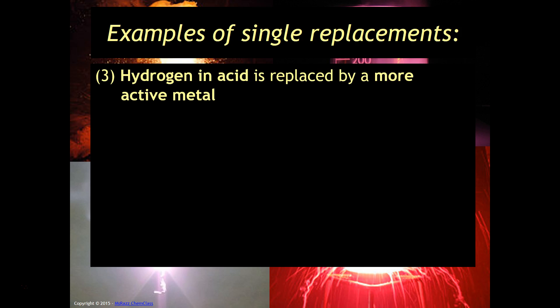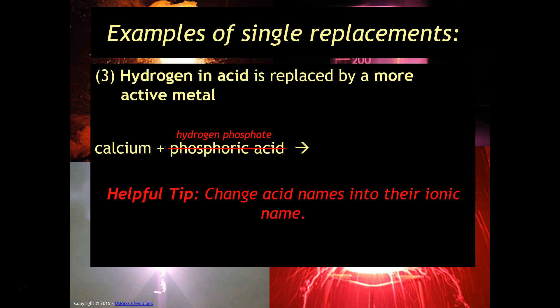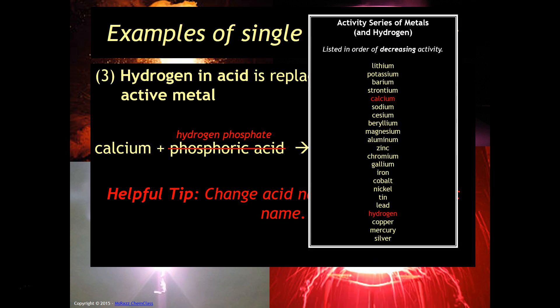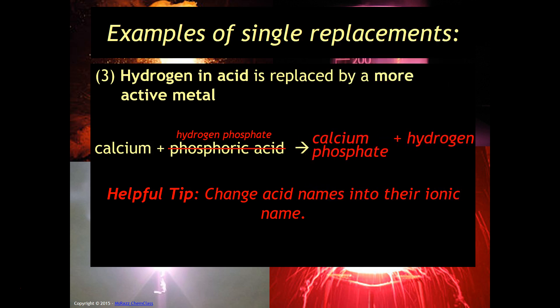Let's look at acids. If you have hydrogen in acid is replaced by a more active metal. For example, calcium plus phosphoric acid. Again, it's not so obvious what's going to replace what here because you've got this thing called phosphoric acid. This is one case, again, where you would change it to the ionic name. So phosphoric, if you remember, -ic must have been -ate. So what we're really looking at is, since an acid is hydrogen phosphate, then we can see if, in fact, this will replace. And so that's why my helpful tip is always change acid names into their ionic name. Calcium is more reactive than hydrogen. So this reaction will occur. And you'll get calcium phosphate plus hydrogen.